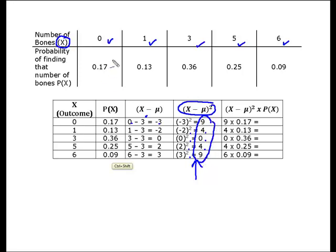And I'm going to finish this last step by saying x minus the mean squared times the probability of x to give me this next step here.